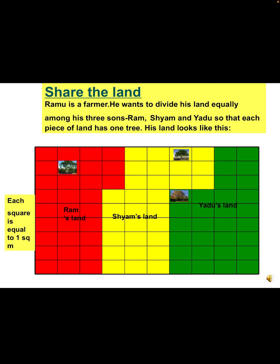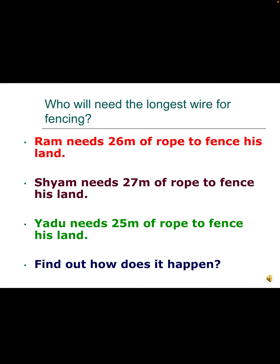Another activity — sharing of land: Ramu is a farmer who wants to divide his land equally among his 3 sons Ram, Shyam, and Yadu, so that each piece has 1 tree. Find the area and perimeter of each piece of land. Who will need the longest wire for fencing? Ram needs 26 m, Shyam needs 27 m, and Yadu needs 25 m of rope to fence their land respectively.